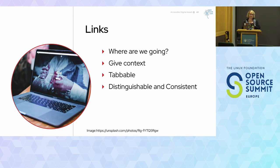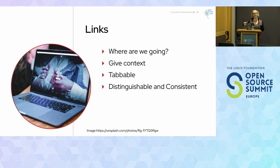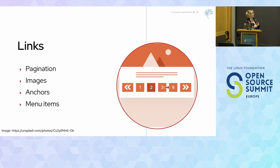Something to think about with links for screen readers — we want to make sure people know where the link is taking them. Without context, when a screen reader reads through links, you shouldn't use words like 'read more,' 'hear,' or 'learn more,' because that doesn't give any context of where those links are taking them. Simply using the URL doesn't tell them either. Use descriptive link text. Remember, links can be used for pagination, as lead images for articles, anchors, and menu items.